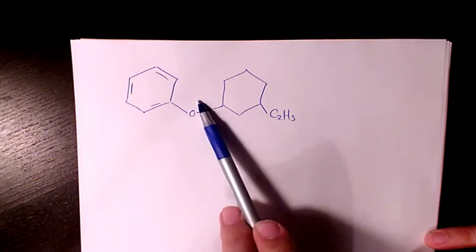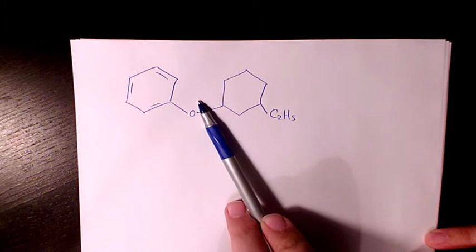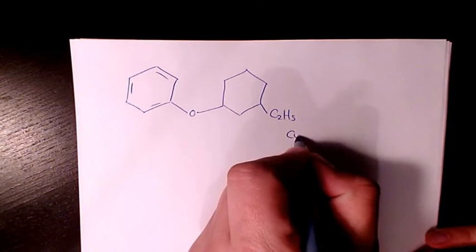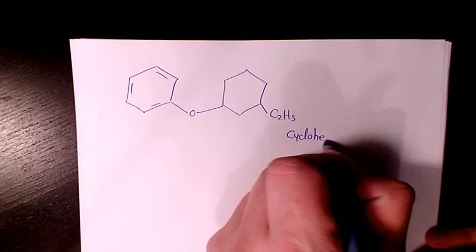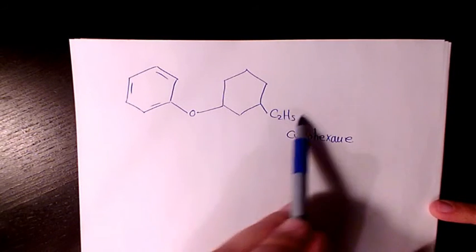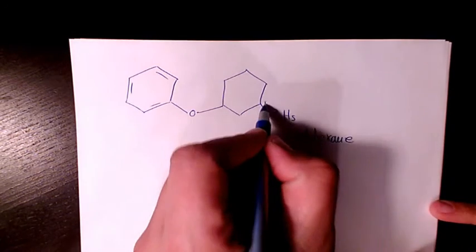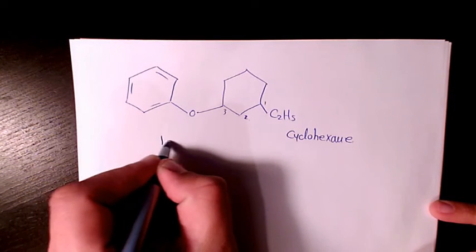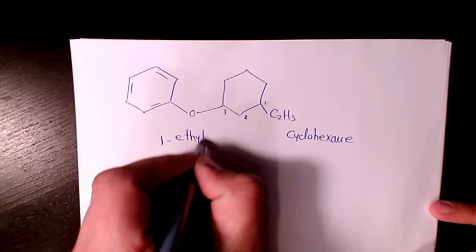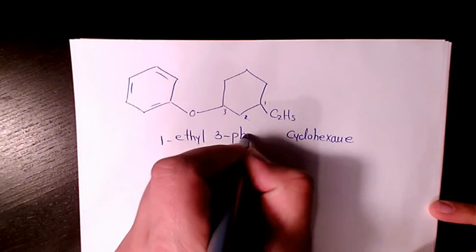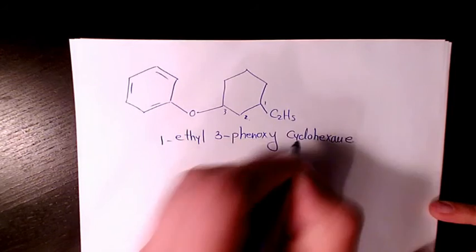They are connected to each other by this oxygen atom, so we have cyclohexane in here. I'm going to write it cyclohexane, and we have one ethyl one, two, three, so it's going to be one ethyl three phenoxy.